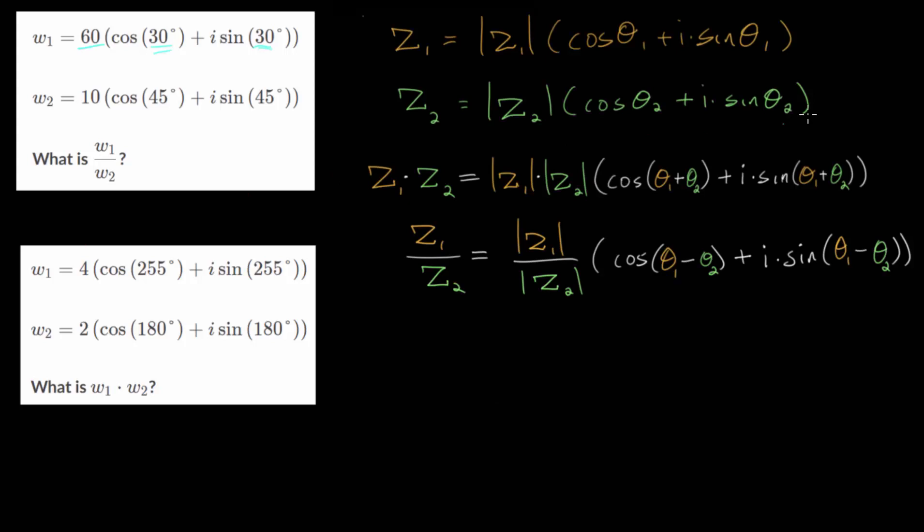We can see with these formulas that if we start with two complex numbers, Z1 and Z2, written in their polar form with their magnitude and their direction, then when they multiply, we multiply their magnitudes and we add their angles. And when we divide, we divide their magnitudes and we subtract their angles.